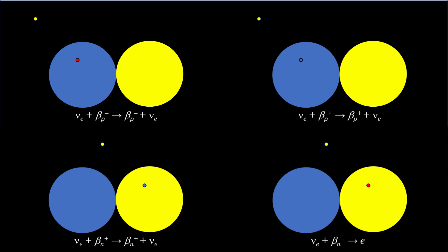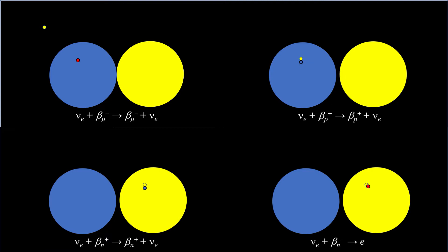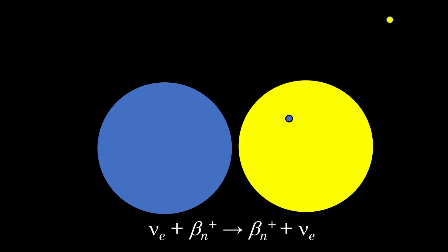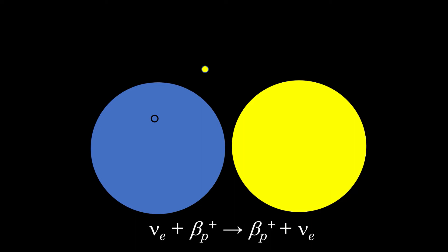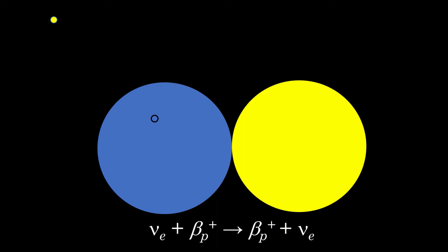Clearly, whenever an electron neutrino with enough energy interacts with a deuteron, it somehow breaks the lone bond holding the two nucleons together, causing them to separate. In addition to breaking the bond, apparently four other things can happen. In one scenario, the neutrino can interact with a beta positron in the neutral nucleon — the neutron — in which case it will just scatter off it but cause the deuteron to split into a neutron and a proton. In a similar case, the neutrino can interact with a beta positron in the positively charged nucleon — the proton — and again scatter off it but break the deuteron up into a proton and a neutron.